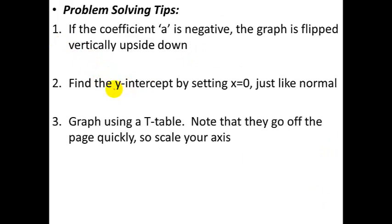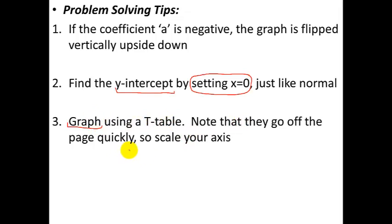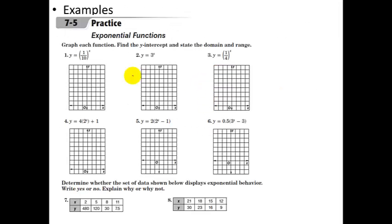When you want to find a y-intercept, we always find it by setting x equal to 0. Something special to remember is that anything to the 0 power is 1. So because the exponent is your variable x, when you set x equal to 0, you're setting the exponent equal to 0, which makes that piece equal to 1. When making a graph, for now we're just going to use t-tables. Know that the values go off the page very quickly, so you want to make your axis scale count by 10s or 5s or something like that.